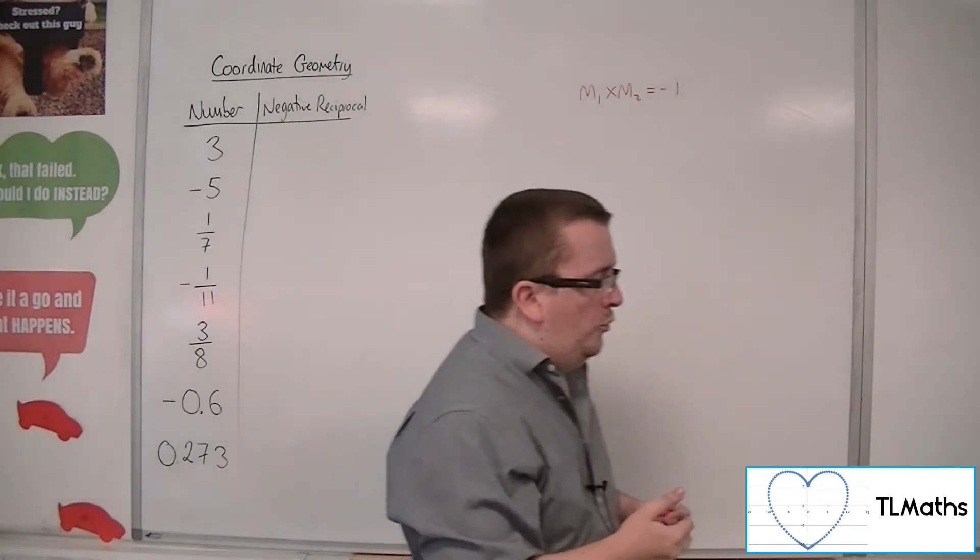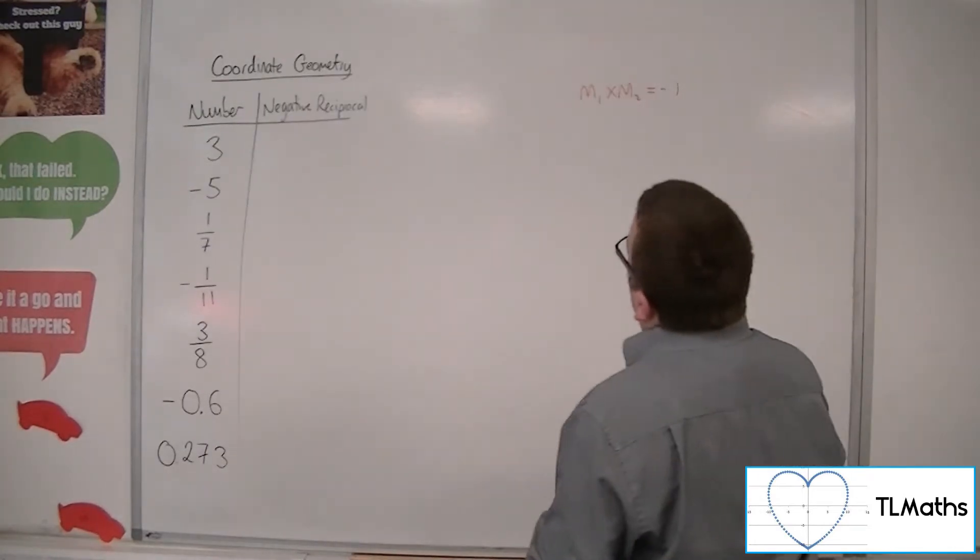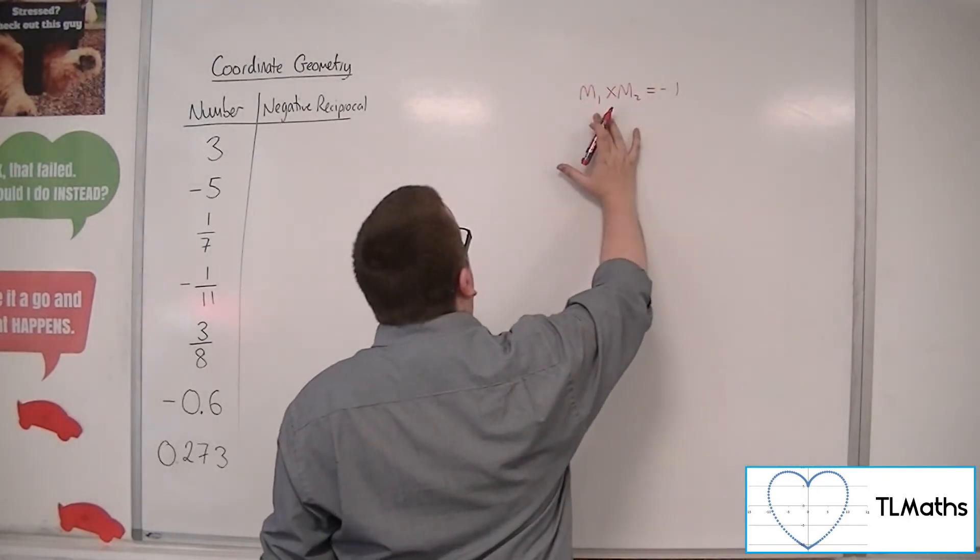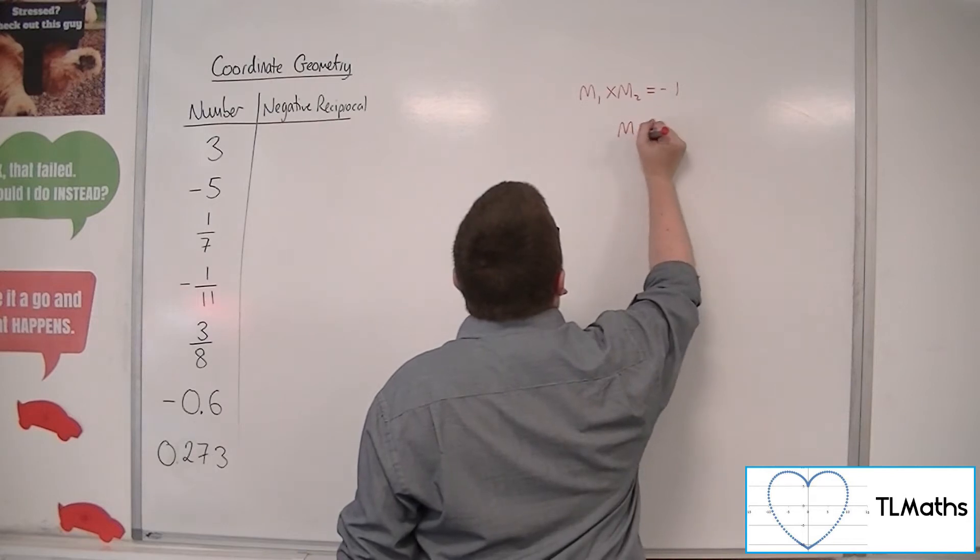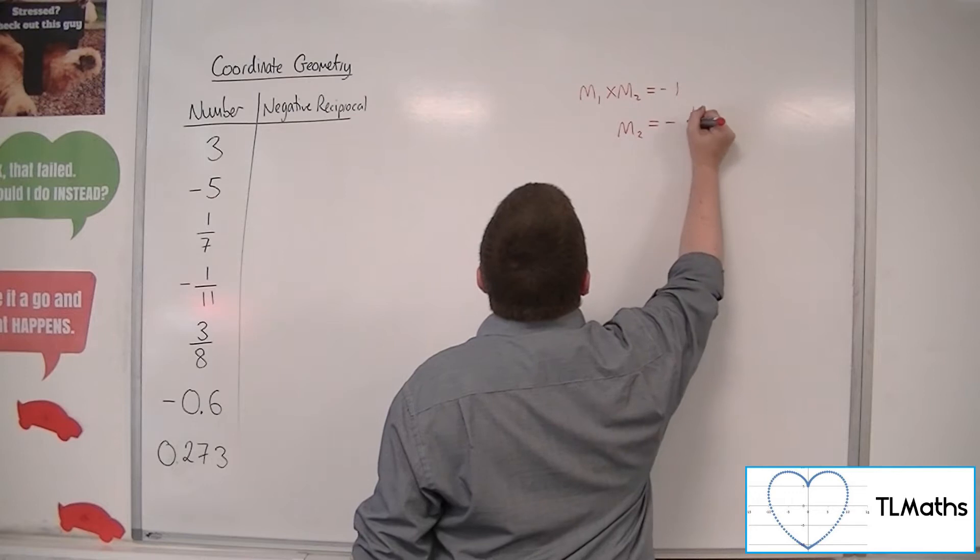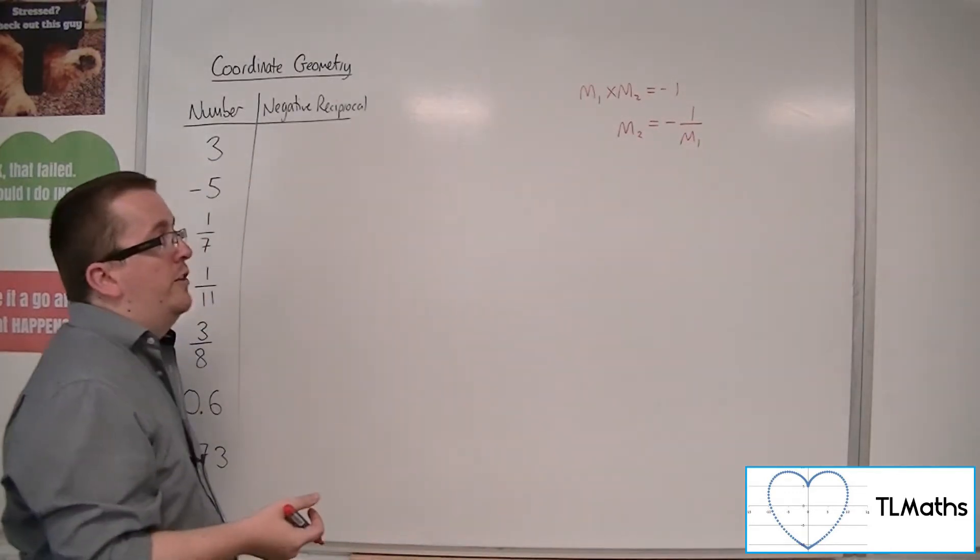So in order for that to be true, then what I can do is I can write the second gradient in terms of the first. So if I divide both sides by m1, then I will get minus 1 over m1. So m2 is equal to minus 1 over m1.